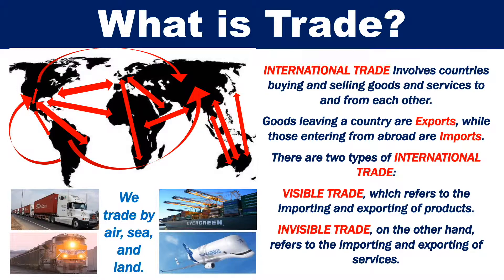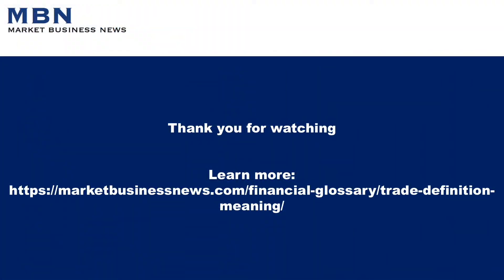There are two types of international trade. One, visible trade, which refers to the importing and exporting of products. And two, invisible trade, which refers to the importing and exporting of services. Thank you for watching this Market Business News video on trade.